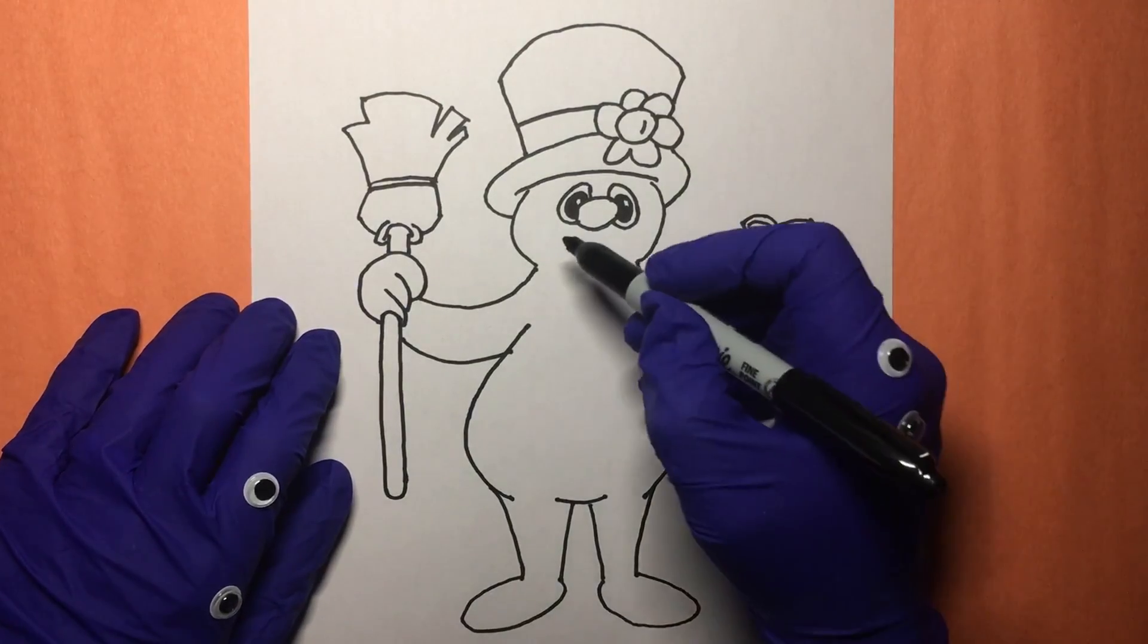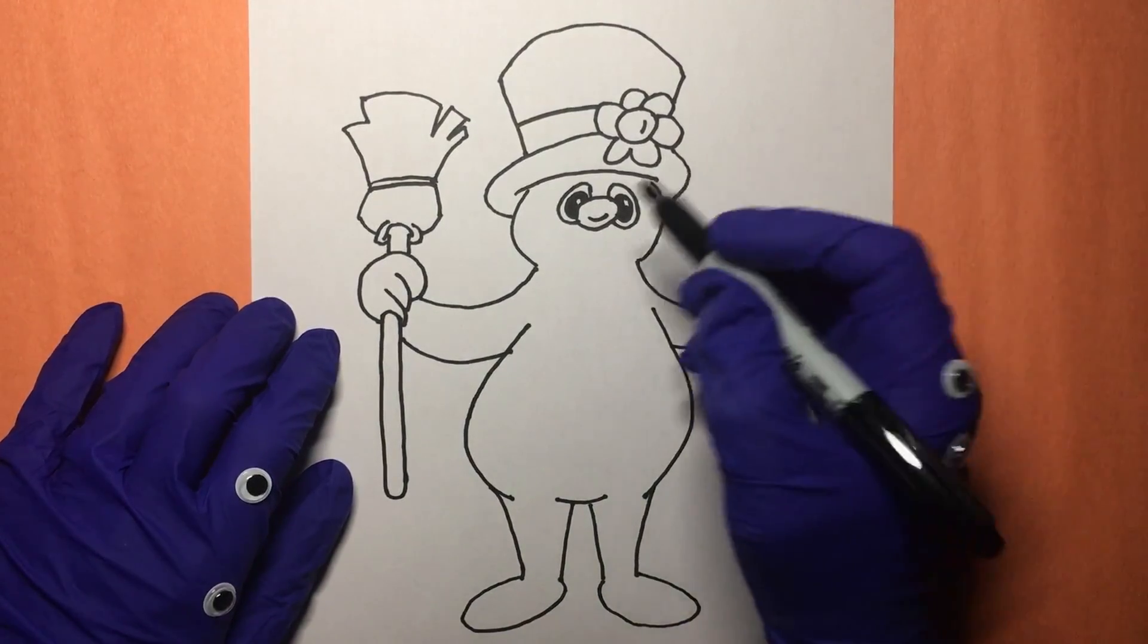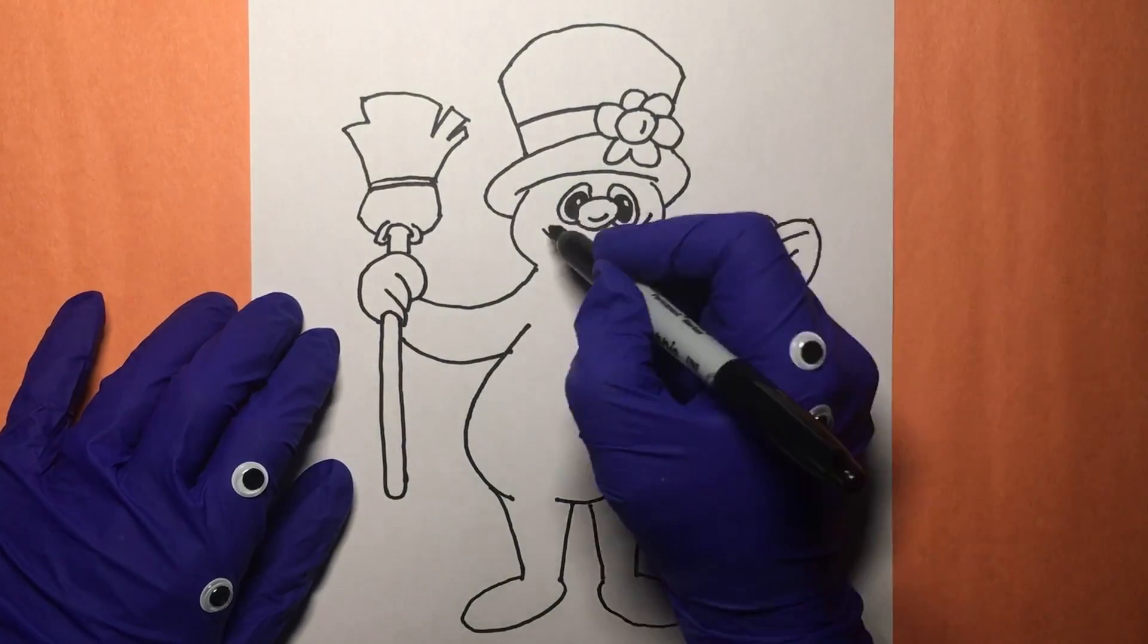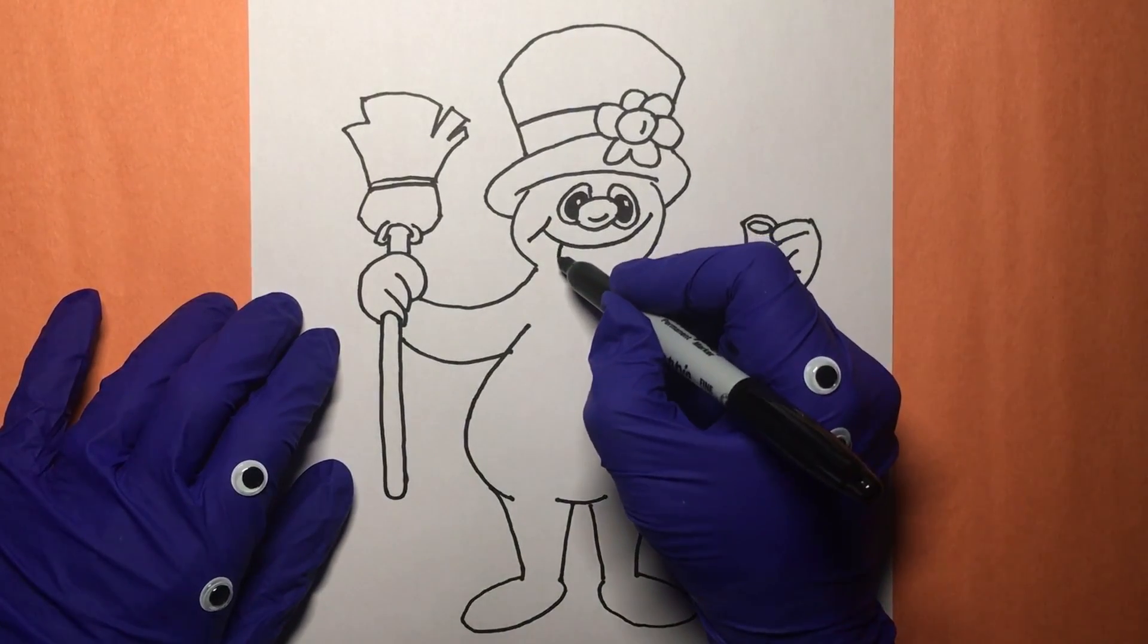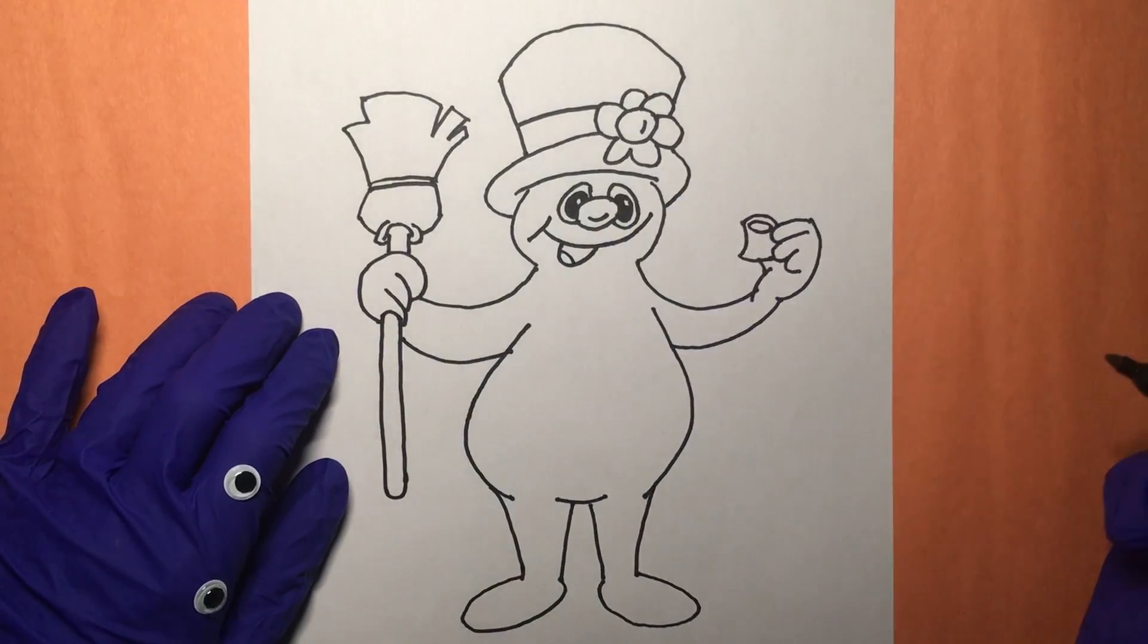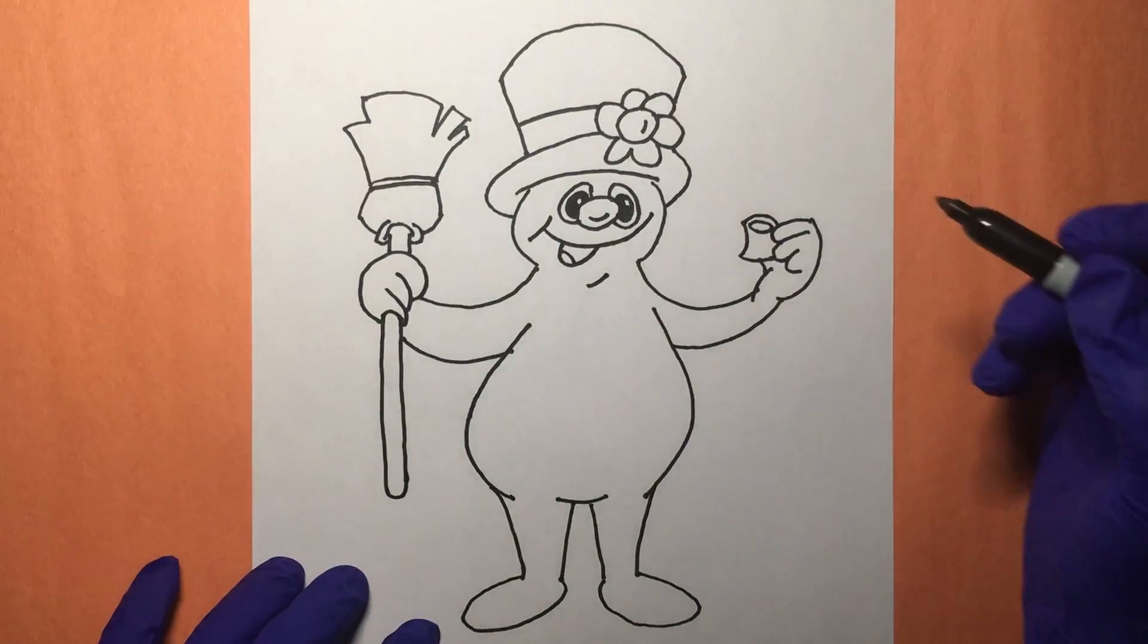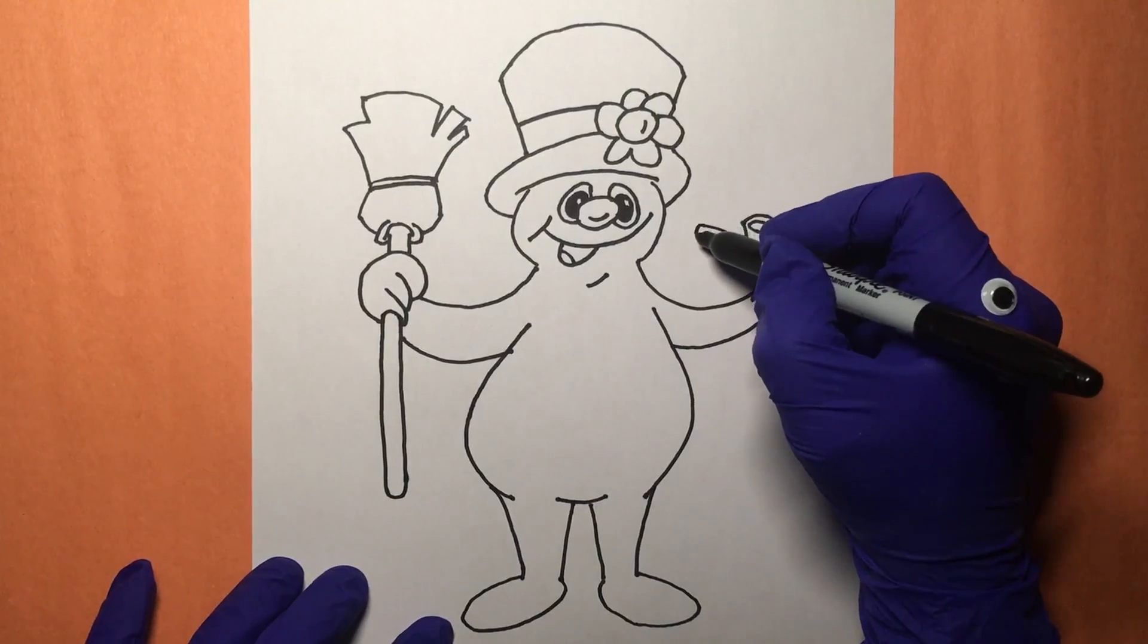Now we can continue with a big old smile and a little bit of a happy-go-lucky time for old Frosty here. Maybe a mouth open and a little bit of a tongue, that'd be nice. There we go. And his chin, I like that. Now maybe a little finishing off of the pipe here.